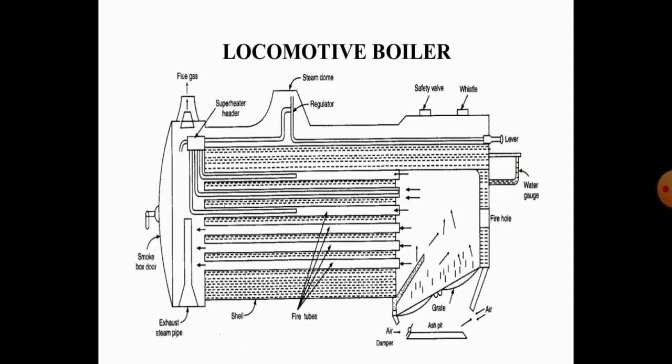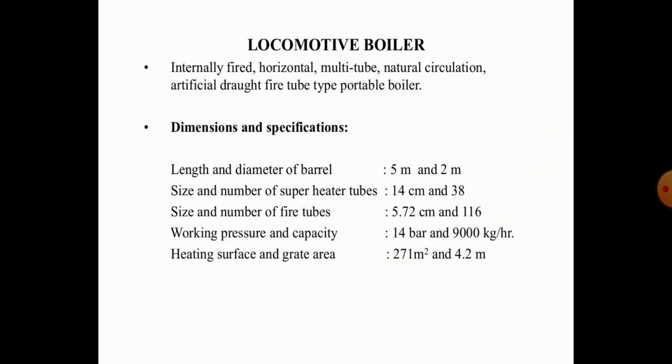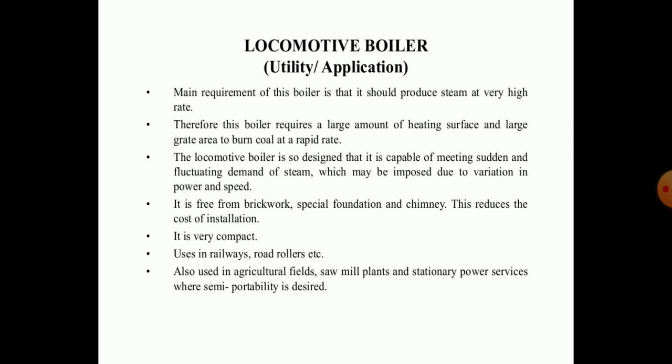You can see the locomotive boiler on screen. It is an internally fired, horizontally oriented, multi-tube, natural circulation type boiler with artificial draft and fire tube type construction. It can be easily transported from one place to another. The main requirement of this boiler is that it should produce steam at a very high rate; therefore, this type of boiler requires a large amount of heating surface and a large grate area.